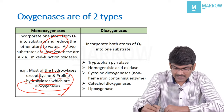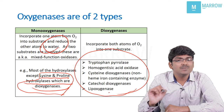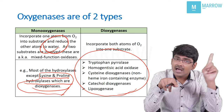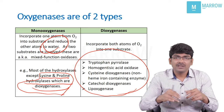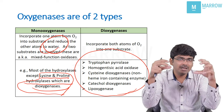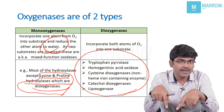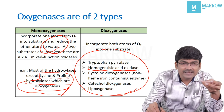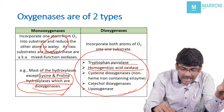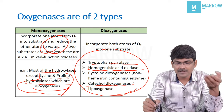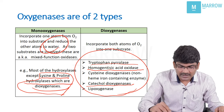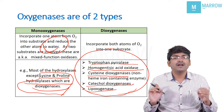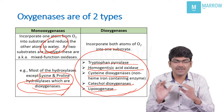Let us see the other dioxygenases. I already discussed dioxygenases in aromatic amino acid metabolism — the cleavage of the ring of aromatic amino acids requires dioxygenases. Tryptophan pyrolase and homogentisic acid oxidase are in aromatic amino acid metabolism. Catechol dioxygenases — also aromatic amino acids. Other dioxygenases include cysteine dioxygenase and lipoxygenases. These dioxygenases incorporate both atoms of oxygen into the substrate.